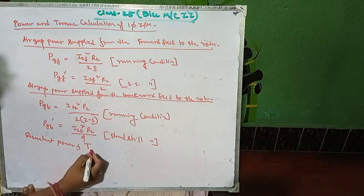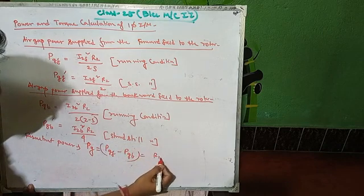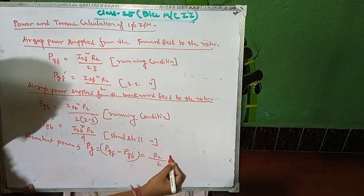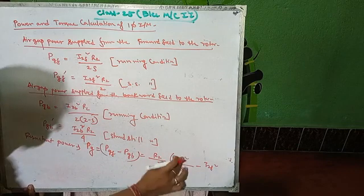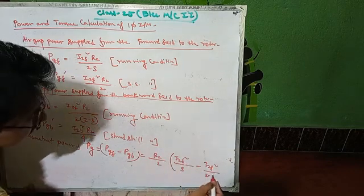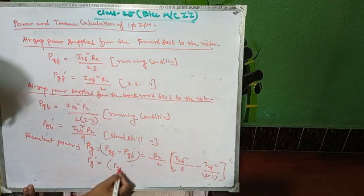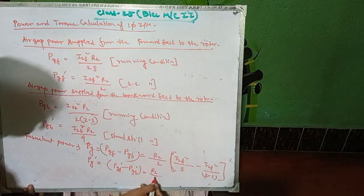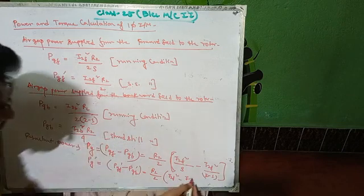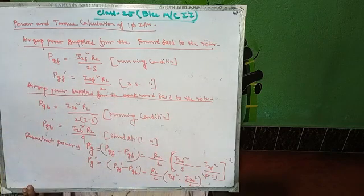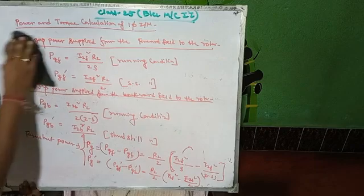The resultant air gap power P_g equals P_gf minus P_gb. Taking R2 by 2 as common: P_g = (R2/2) times [I2f squared / s minus I2b squared / (2 minus s)]. At standstill condition, it will be P_gf' minus P_gb' = (R2/2)(I2f squared minus I2b squared).